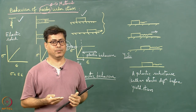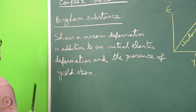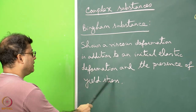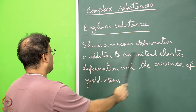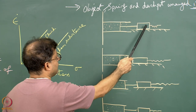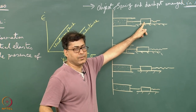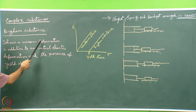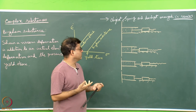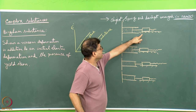We are now going to see some more complicated deformation behaviors. We look at the Bingham body, or Bingham substance. Such a body shows a viscous deformation in addition to an initial elastic deformation and the presence of a yield stress. When we say there is an initial elastic deformation and the presence of a yield stress, the mechanical model will consist of the weight, the spring, and additionally — for the viscous deformation — a dashpot. All three are connected in series.